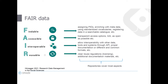FAIR data and the FAIR principles are an essential aspect of research data management in general. FAIR stands for Findable, Accessible, Interoperable, and Reusable. Findable means that research data should be assigned persistent identifiers, enriched with metadata so they can be found by repositories, described using standardized vocabularies, and registered in a searchable catalog.